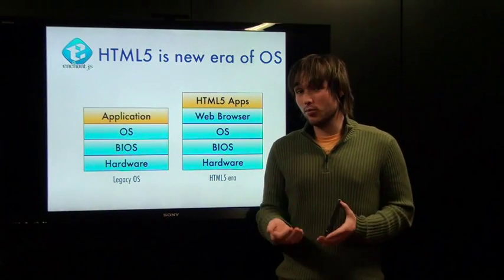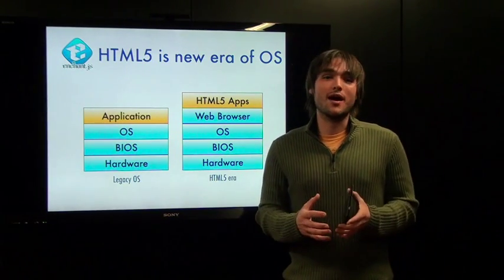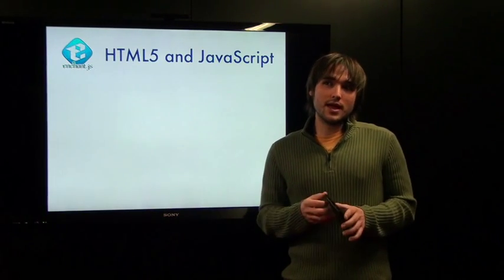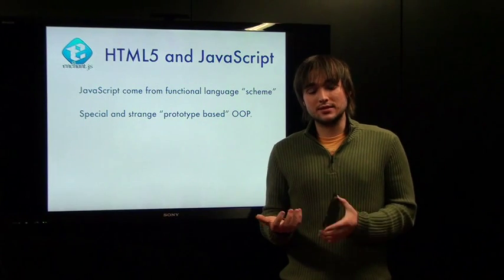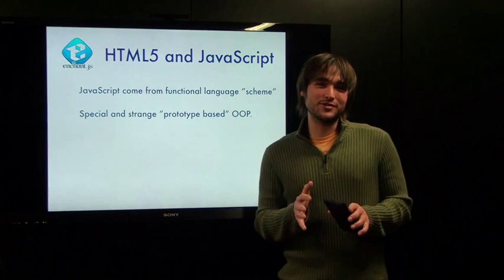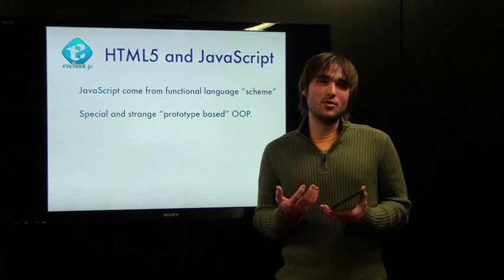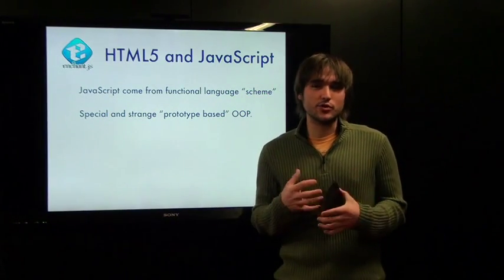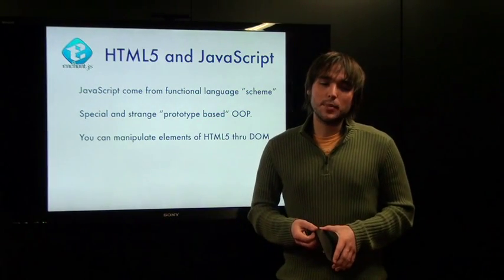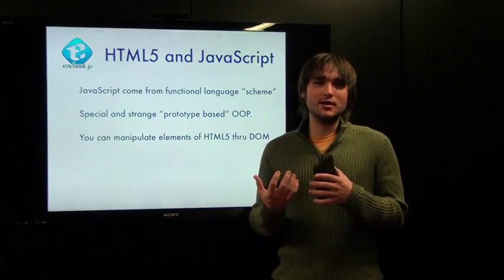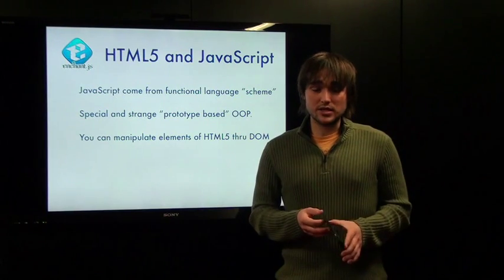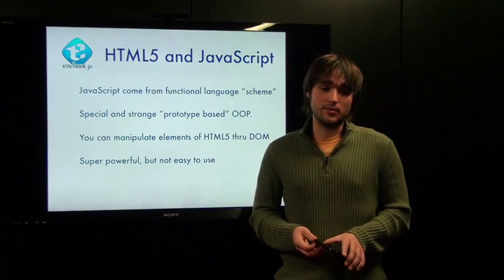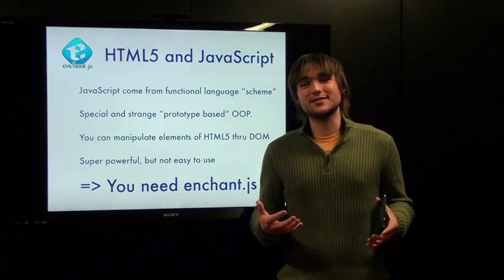We have hardware, BIOS, OS, and on top of that a web browser, and then inside of that web browser you have applications written in HTML5. You can see this with several mainstream web applications in use today. When you pair that with JavaScript — which comes with a functional language scheme and is a special prototype-based, object-oriented programming language — there are no true classes like with Java. You can create prototypes that are sort of pseudo-classes. The most important aspect of JavaScript is that you can manipulate the DOM, the document object model, inside browsers. It's super powerful but not always easy to use, especially for high-level things like game programming, which is why you need Enchant.js — because Enchant.js simplifies this process exponentially.